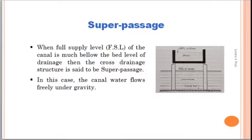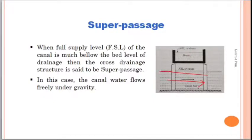Next, super passage. In the case of super passage, the canal runs below the drain. In this figure, the canal is running in one direction and the drain is running perpendicular to it. This is the full supply level of the canal and this is the bed level of the river. From the figure it is clearly shown that the full supply level of the canal is below the bed level of the river.